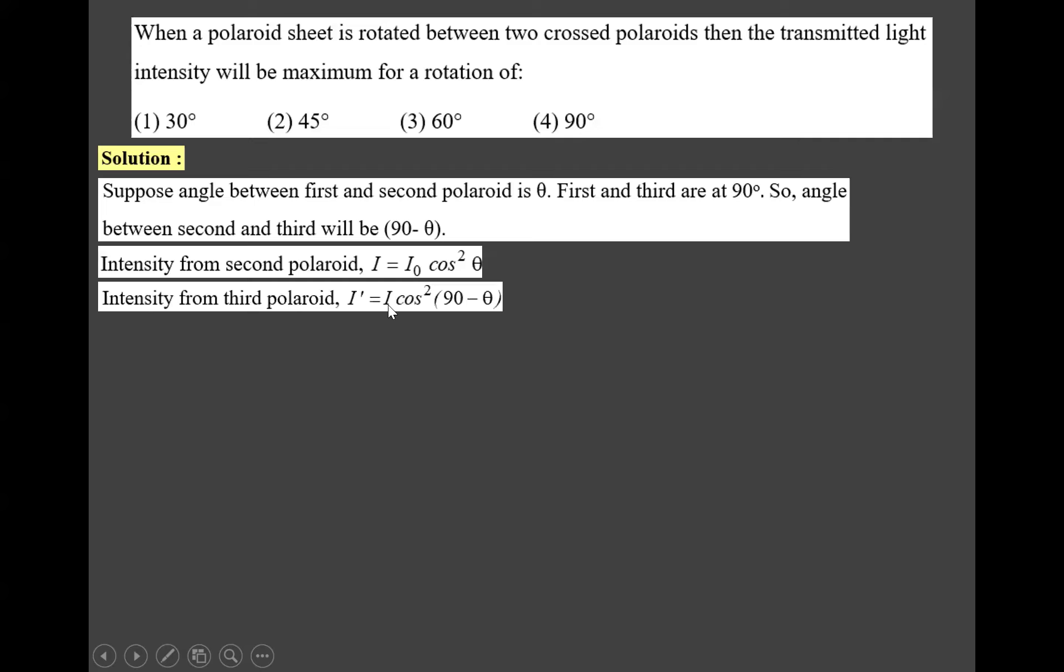Here substitute the value of I. So I' equals I₀ cos² theta cos²(90 - theta). Now cos(90 - theta) is sin theta. So we can write I' equals I₀ cos² theta sin² theta.